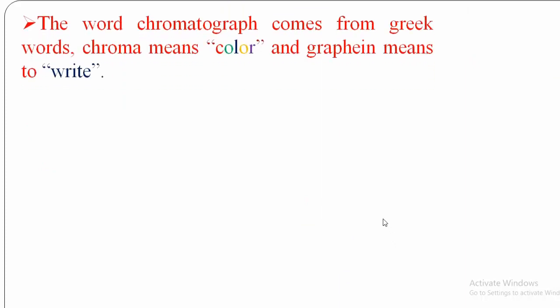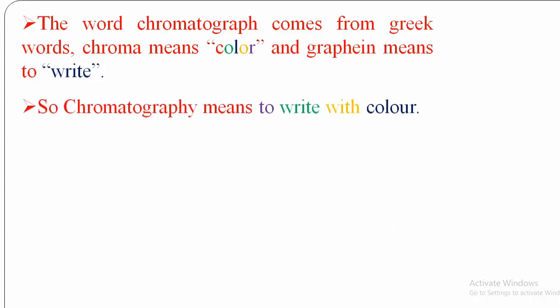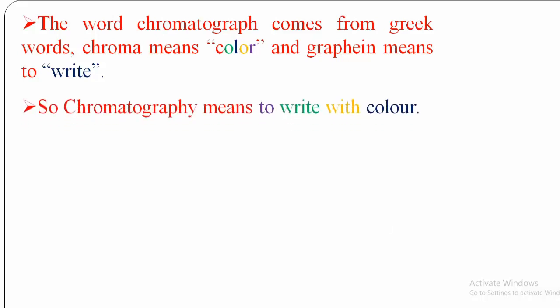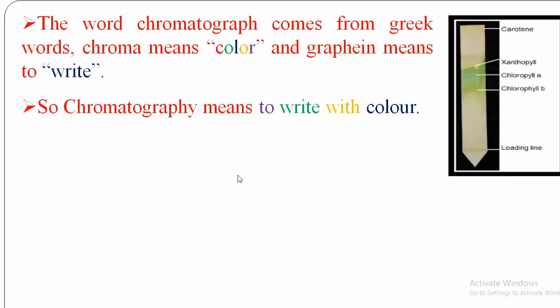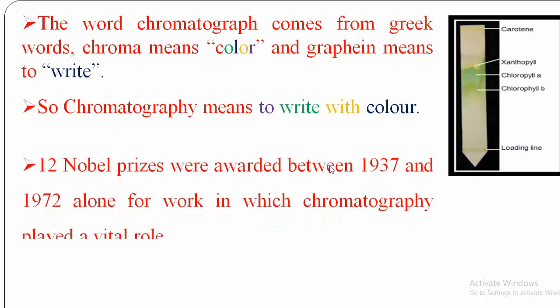We will see the word chromatography. It comes from the Greek word 'chroma,' meaning color, and 'graphe,' meaning to write. So chromatography means to write with color. You can observe here these chlorophyll pigments — the pigments in the plants — which are separated by using the chromatography technique.